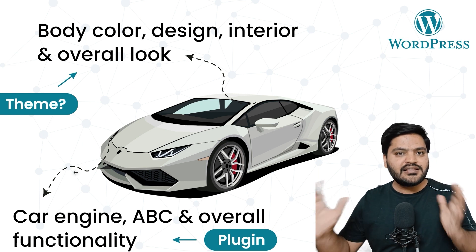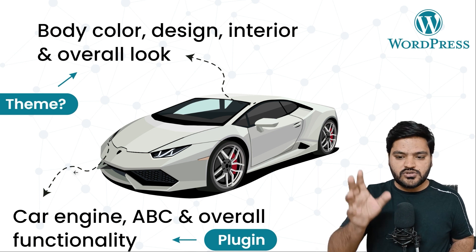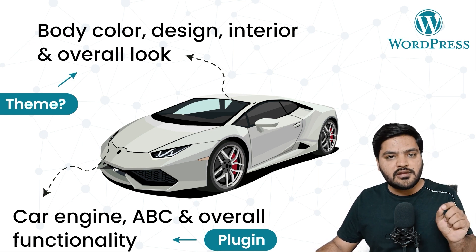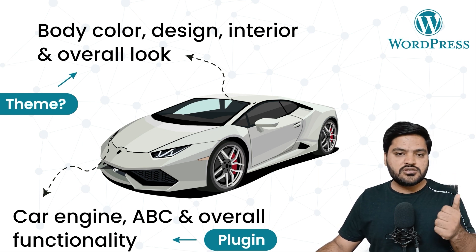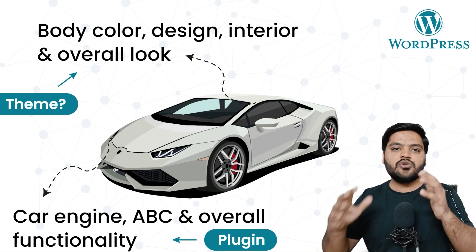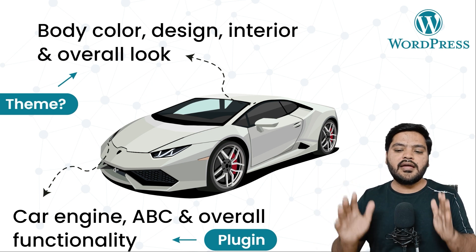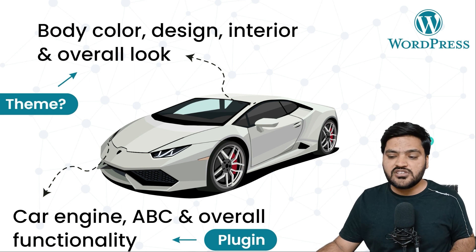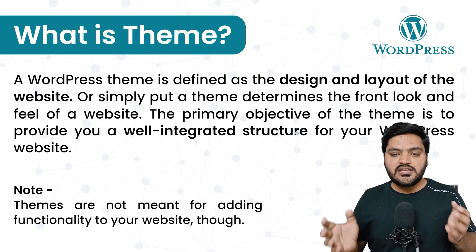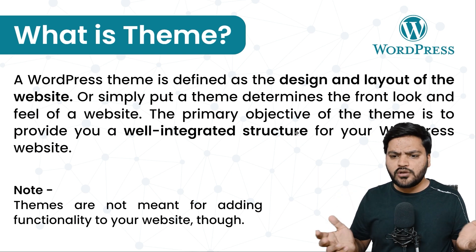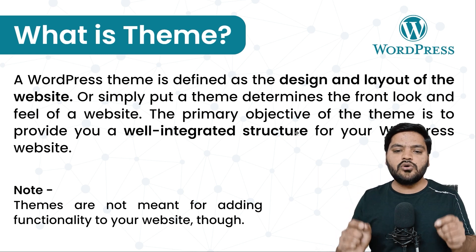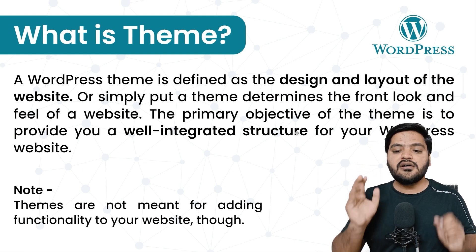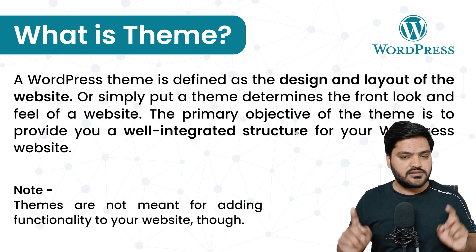Unlike the theme, which provides only the designing components — if you take the same car example, the designing and structural part is taken care of by theme, while the functionality part — engine, accelerator, brake, clutch, and the overall functionality — these are handled by the plugin. So what is the theme? The theme is defined as a design and layout of the website, or simply put, a theme determines the front look and feel of the website. The primary objective — and this is a very important line — the primary objective of a theme is to provide a well-integrated structure for your WordPress website.